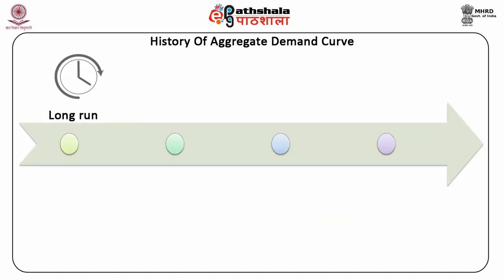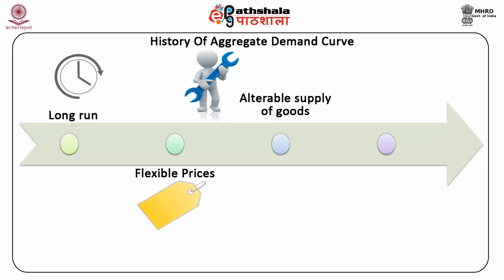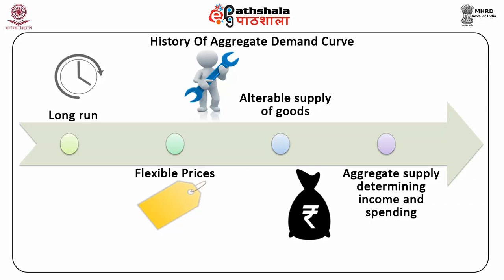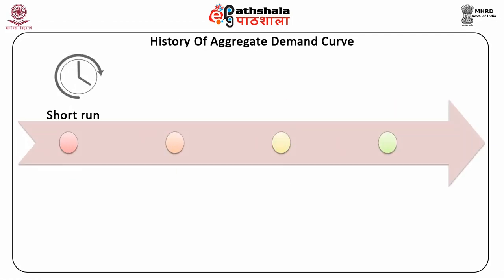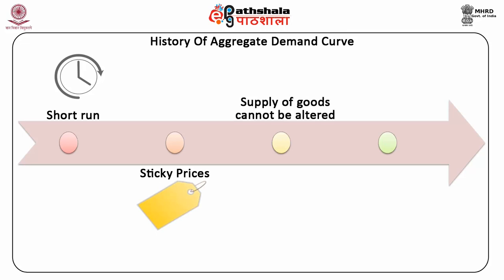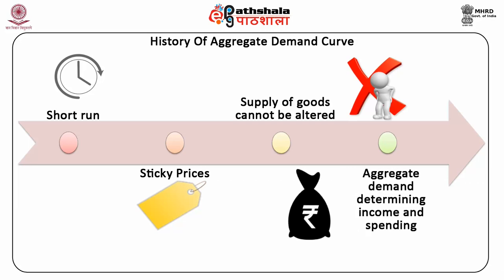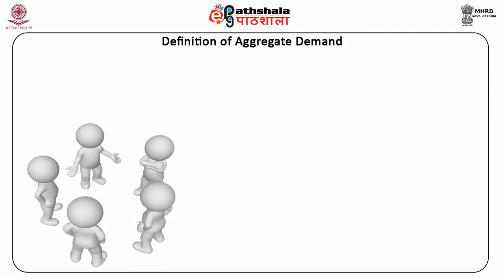In the long run, prices are flexible and supply of goods can be altered; hence, aggregate supply determines the level of income and spending in the economy. In the short run, prices are sticky and supply of goods cannot be altered; hence, aggregate demand determines the level of income and spending in the economy. Moving on to the definition of aggregate demand.